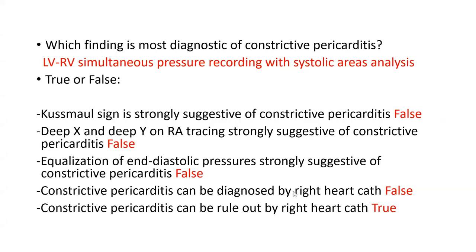Answering the original questions: the most diagnostic finding is LV-RV simultaneous pressure recording with systolic area bulk analysis. All five true/false statements are false: Kussmaul sign is sensitive but not specific; deep X and Y are sensitive not specific; equalization of end-diastolic pressures is the worst — non-sensitive and non-specific; constrictive pericarditis cannot be fully diagnosed by right heart cath alone since you need LV-RV simultaneous recording; but it can practically be ruled out by right heart cath if all those sensitive criteria are absent.